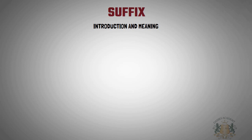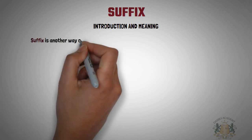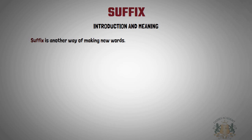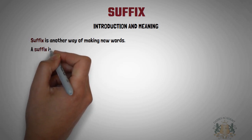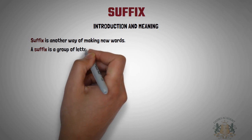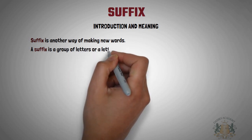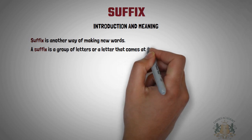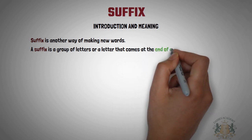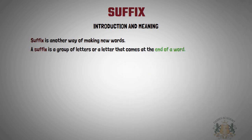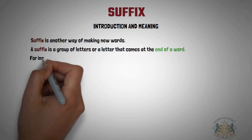First of all, what is a suffix? A suffix is a group of letters or a letter that comes at the end of a word. A suffix is added at the end of a root word. You know, a prefix is at the beginning — as I said, 'pre' means at the beginning. A suffix is at the end.